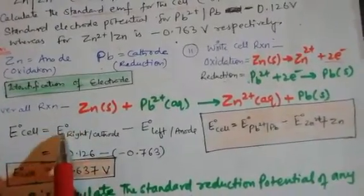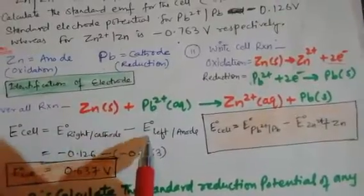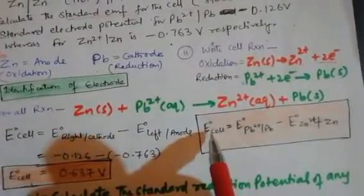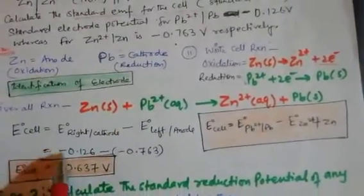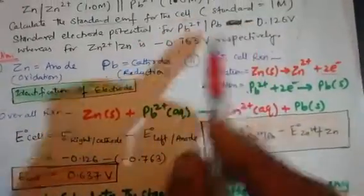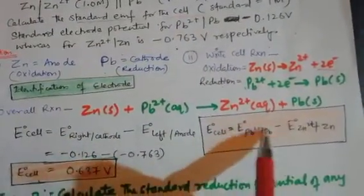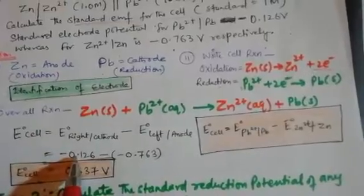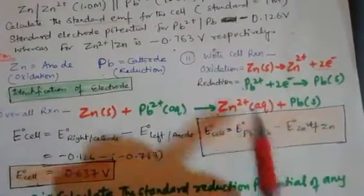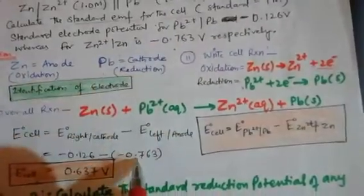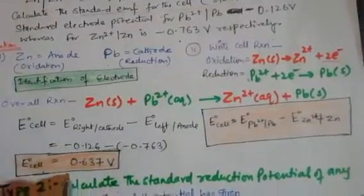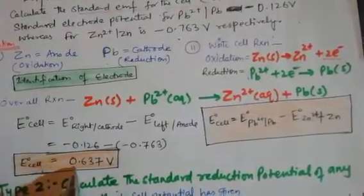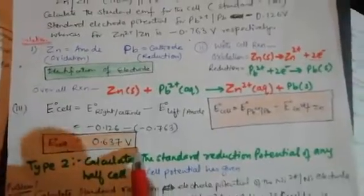E°cell is calculated by E°cathode − E°anode, or E°right − E°left. Right-hand side is lead, left-hand side is zinc. So E°cell = (−0.126) − (−0.763) = −0.126 + 0.763 = 0.637 volt. This is the cell potential of this particular cell.